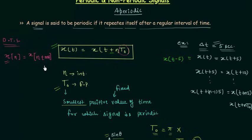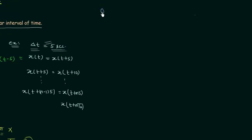This is a very important point. The fundamental frequency for discrete time signals is denoted F and equals 1/N. The unit remains the same. Now here is a true/false question: Is a DC value periodic in nature? You need to decide whether this statement is true or false.